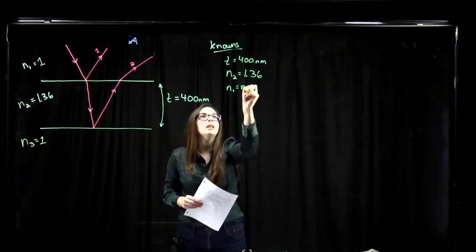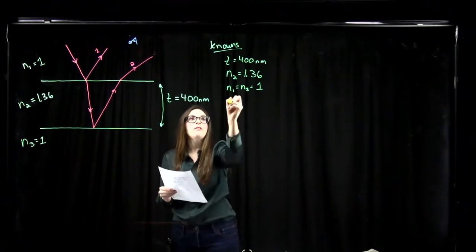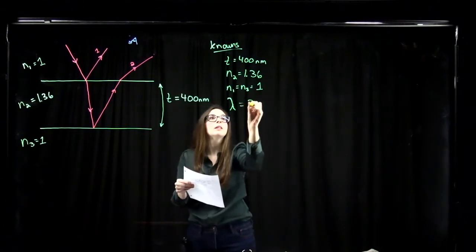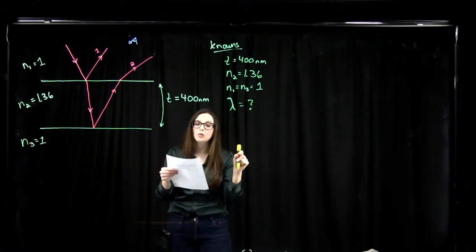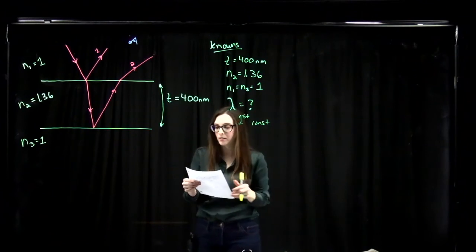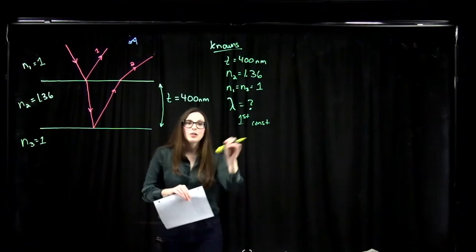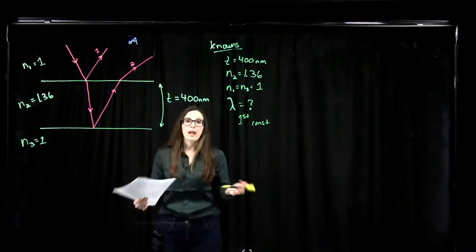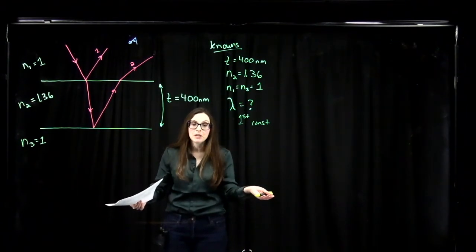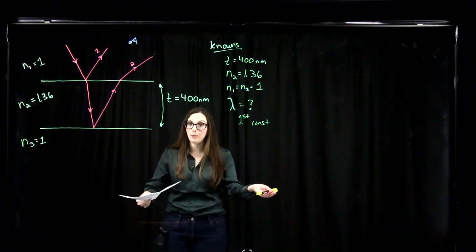We can say N1 equals N3 equals 1. The question asks: what incident wavelength will result in the first constructive interference in the reflected light? To determine which equation to use for constructive interference, we need to consult our index of refraction values and our thin film truth table.